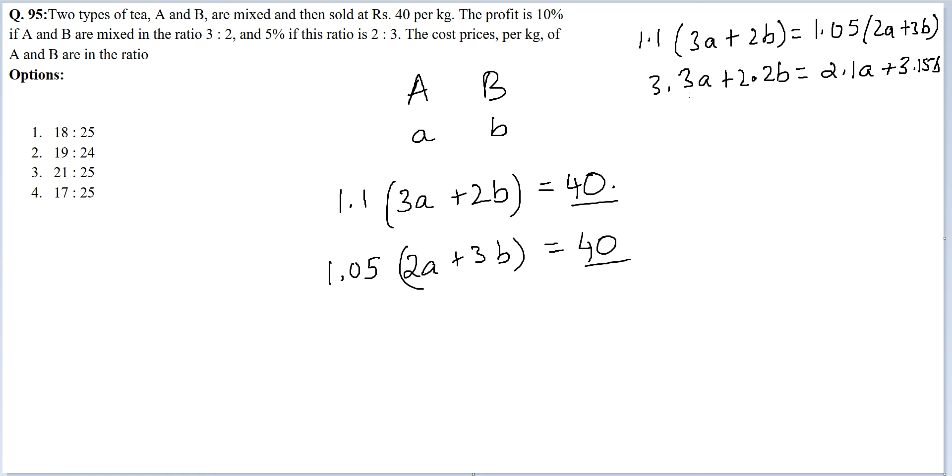Bring the terms of a to this side and terms of b to that side. You get 1.2a = 0.95b, or a/b = 95/120.